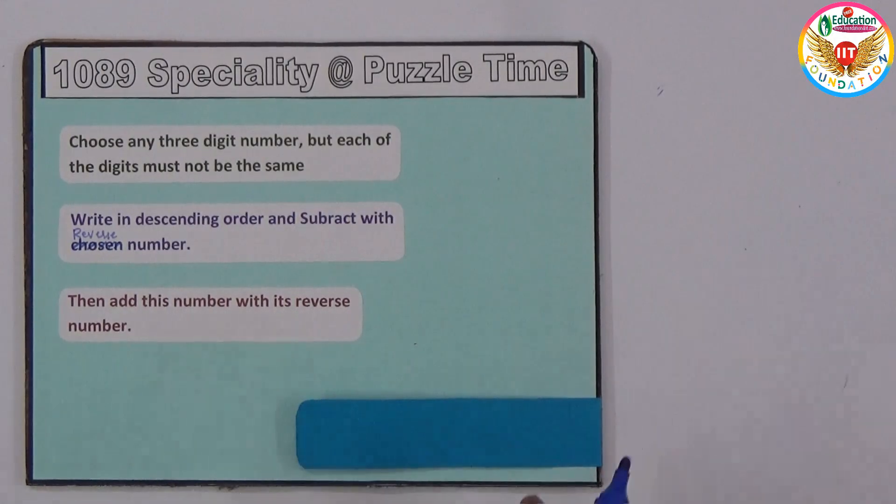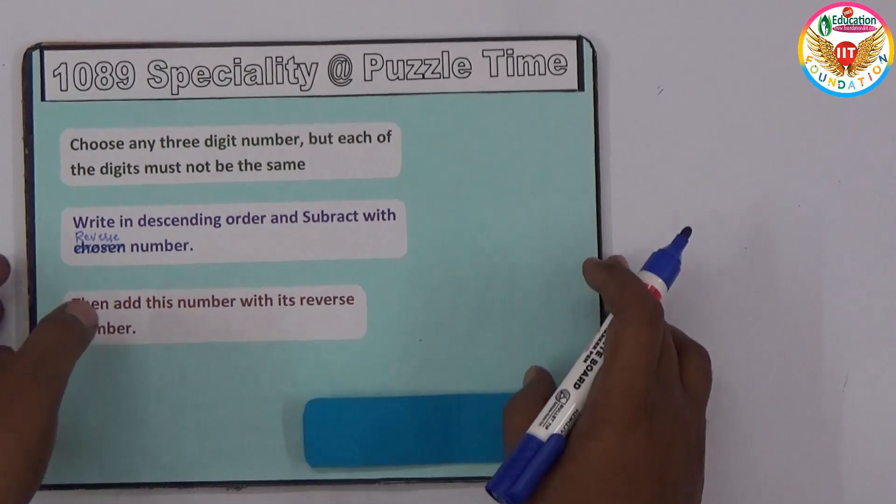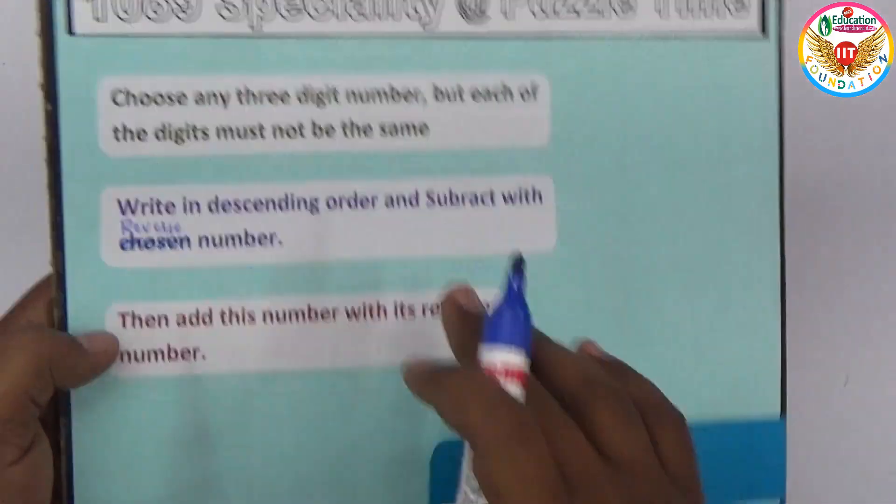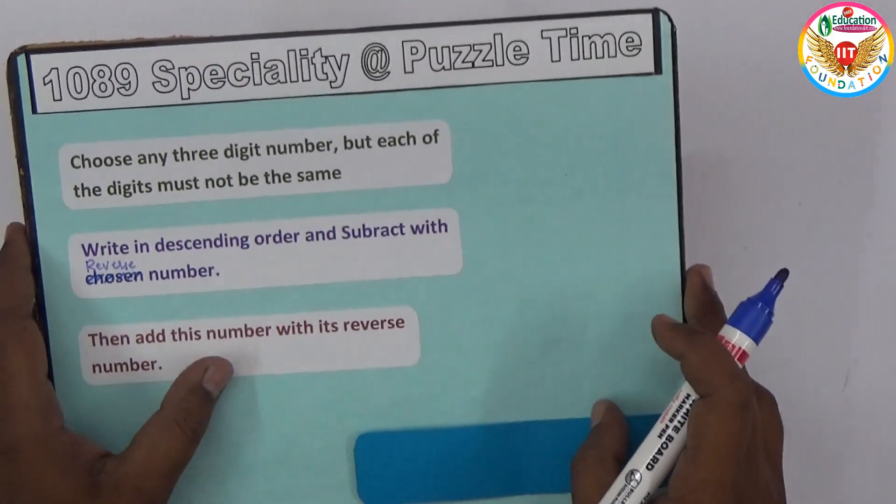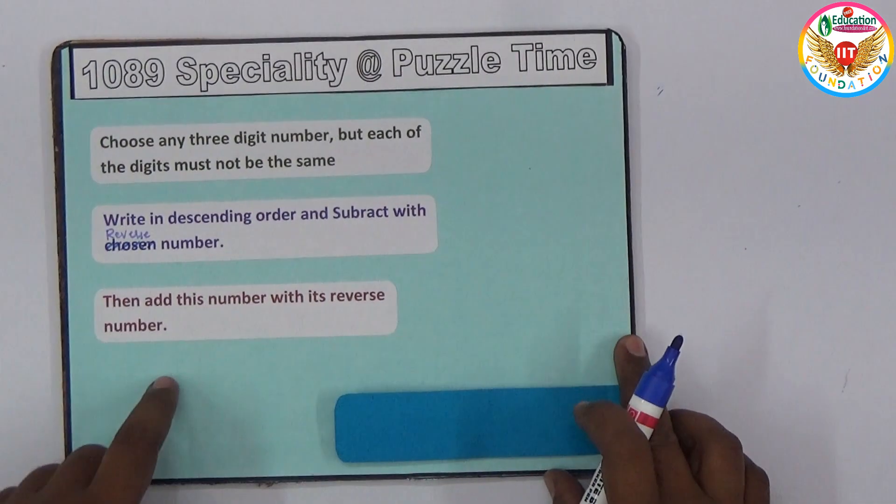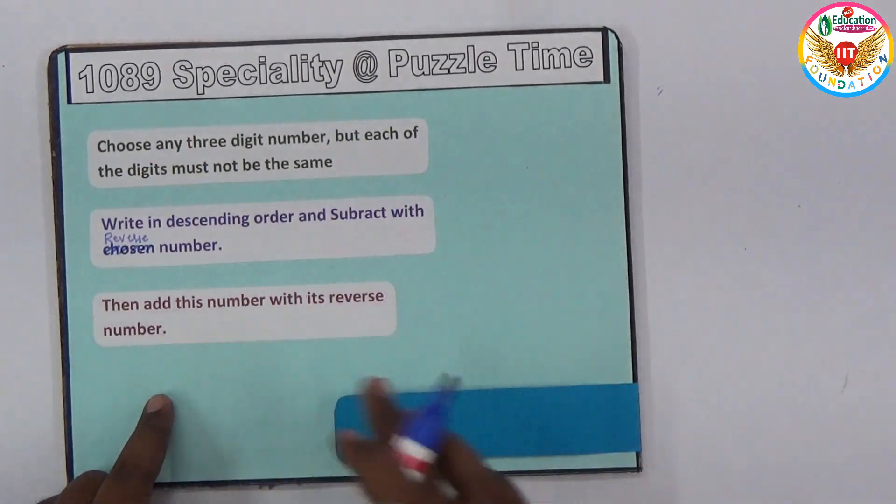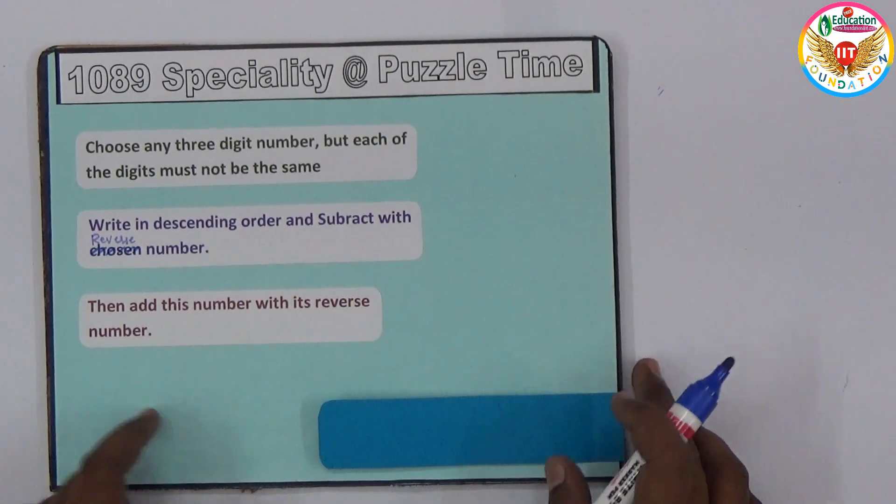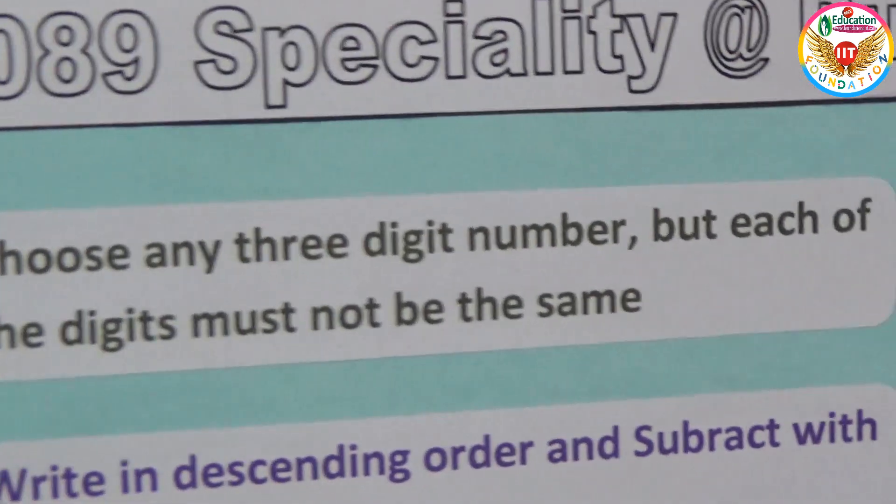Welcome to educational channel. In this video I will show one simple puzzle. This is actually a math trick. On a normal cardboard I prepared one question. Here are three statements based on which we need to frame the question. We need to choose any three-digit number, but each of the digits must not be the same.